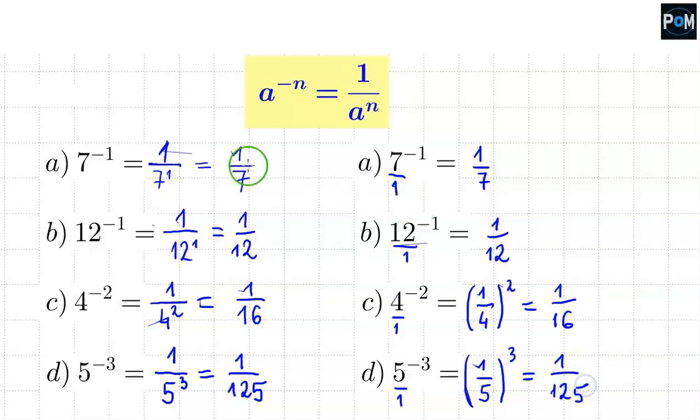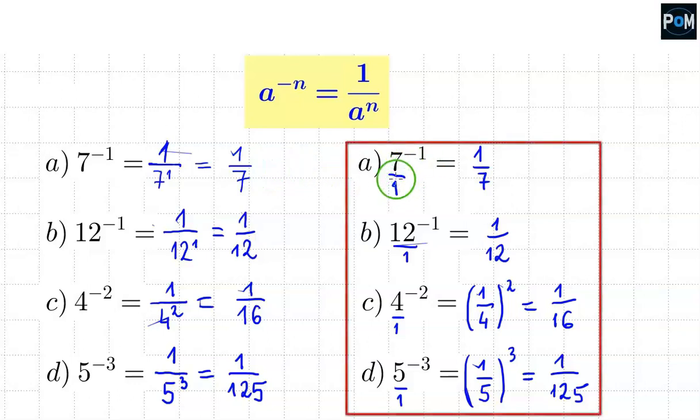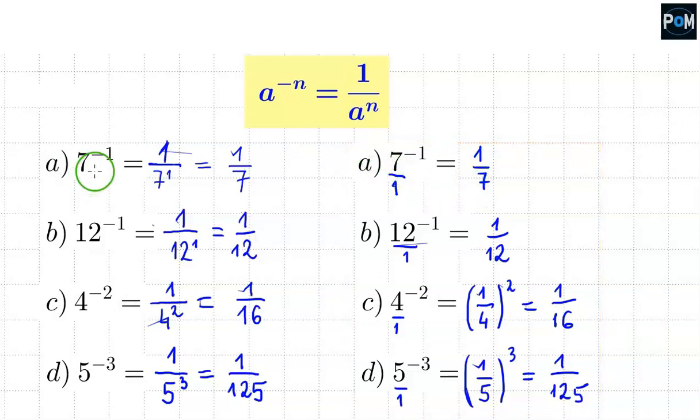So as you can see, whether by this method or that method, we get the same result. It would be good to know both methods, because each has its advantages. The method with inverting the fraction is good for fractions, when we count fractions. However, this method is much better if we don't have fractions, we have whole numbers, then it works faster here. Getting the result is faster, and this method proves more useful in subsequent math sections, for example in logarithms. So it would be good to know both methods.